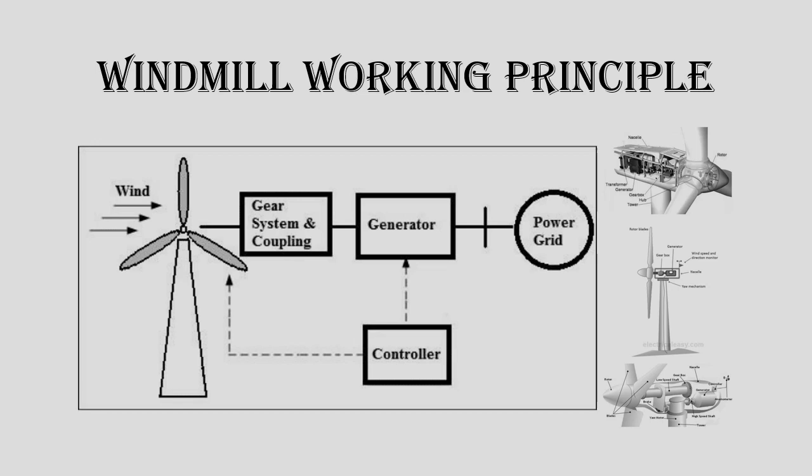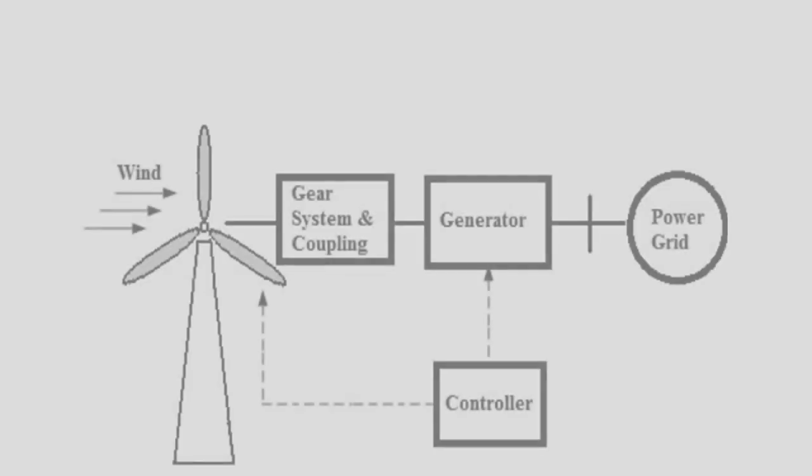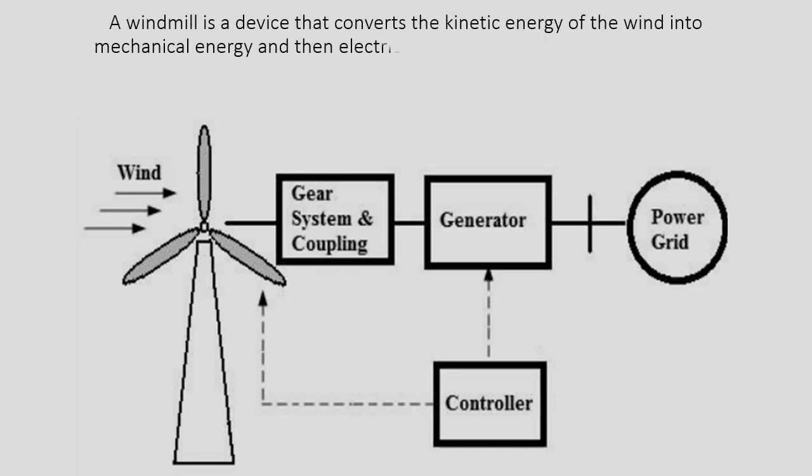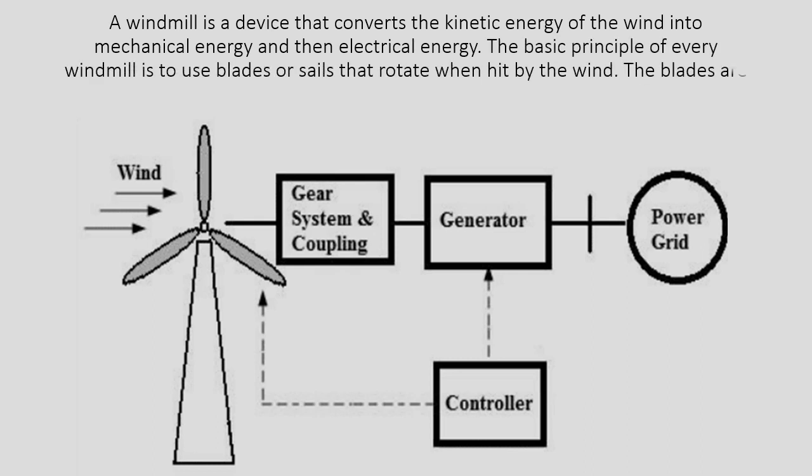Windmill working principle. A windmill is a device that converts the kinetic energy of the wind into mechanical energy and then electrical energy. The basic principle of every windmill is to use blades or sails that rotate when hit by the wind.